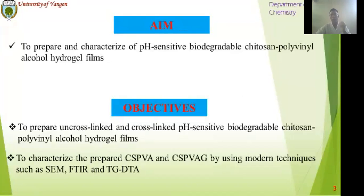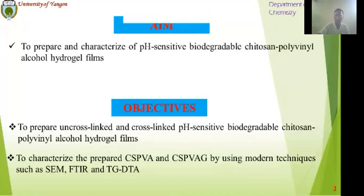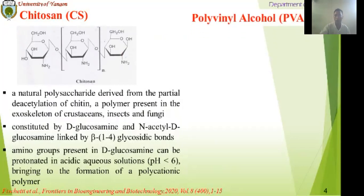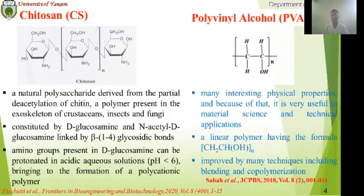The aim of today's research is to prepare and characterize the acidity of the chitosan polyphenate alcohol hydrogel. Chitosan is a natural polysaccharide derived from the partial deacetylation of chitin, the polymer present in the exoskeleton of crustaceans such as shrimp and crab. It can be constituted by D-glucosamine and N-acetyl D-glucosamine linked by beta-1,4 linkages. The amino groups present in D-glucosamine can be protonated in acidic solution, bringing to the formation of a polycationic polymer. Polyvinyl alcohol has many interesting physical properties and is very useful in material science and technical applications. PVA is a linear polymer and is improved by many techniques, including blending and co-polymerization.